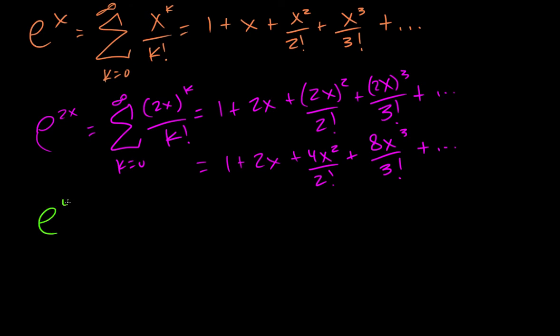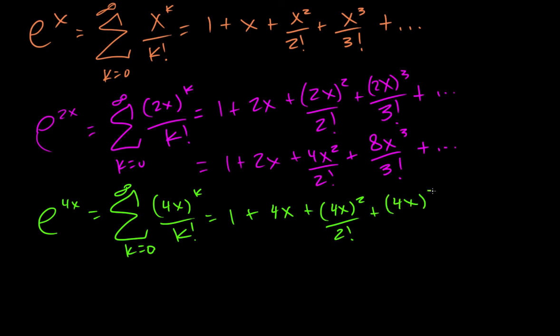Okay, the next one we want to find is e to the 4x. So we do something similar, we just replace all the x's right here with 4x. And I'm just going to do the same thing here. And so that gives us 1 plus 4x. If we square that, it's 16x squared over 2 factorial. And then 4 to the 3rd is 64x cubed over 3 factorial.